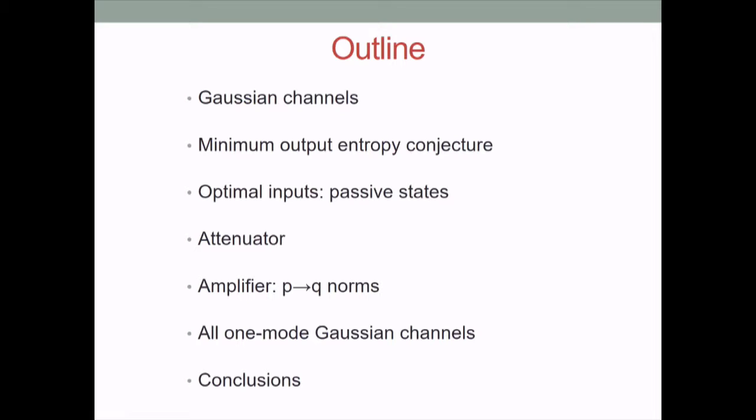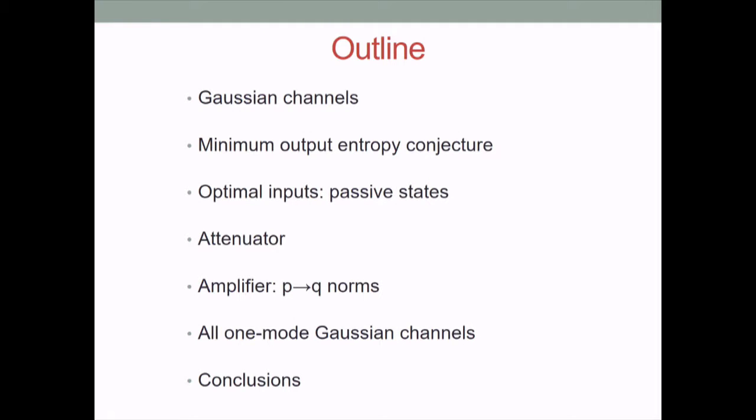Here's the outline of the talk. I will start by introducing Gaussian quantum systems and Gaussian quantum channels, then I will state the problem of minimizing the output entropy of the channel for given input entropy, and then I will present the key steps of the proof. The first step is proving that we can restrict to states diagonal in the Fock basis, so-called passive states, and then the problem becomes a classical problem in discrete probability. Then I will present the proof for the quantum attenuator and extend the results to all the other Gaussian quantum channels.